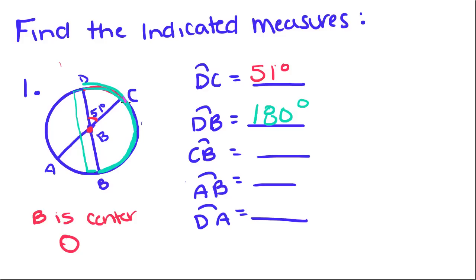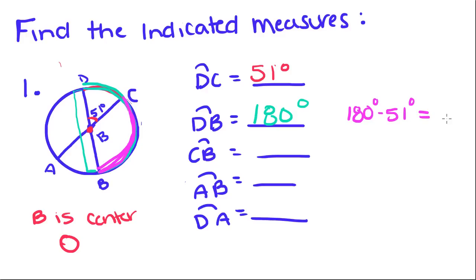Now they want just this section of the arc — arc CB. If you remember those rules about segments where you can add the parts to find the total or subtract one part to find the other, we can do the same thing here. Since the big arc CDB is 180 degrees and the smaller arc is 51 degrees, we do 180 degrees minus 51 degrees, which gives us 129 degrees. So the measure of arc CB is 129 degrees.